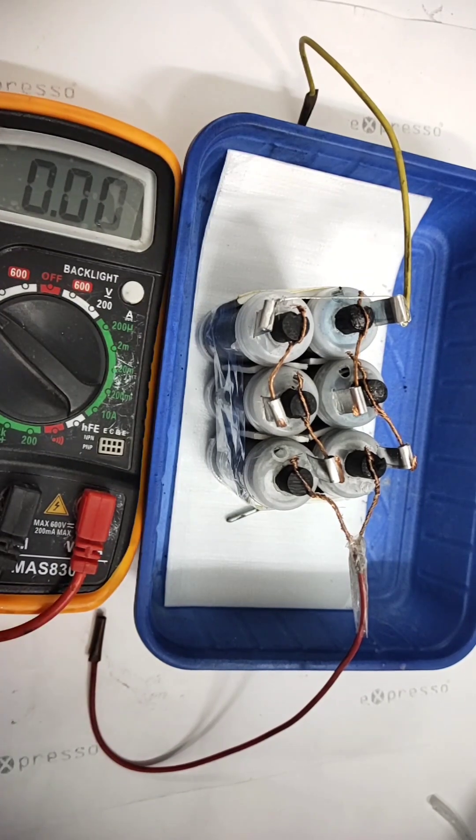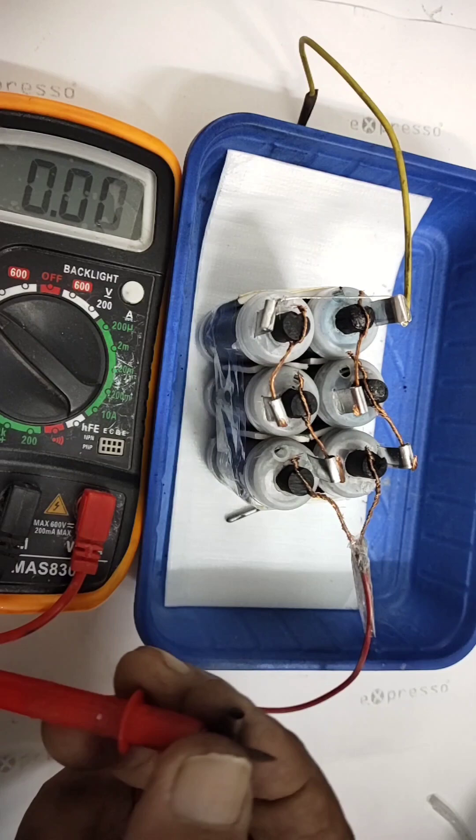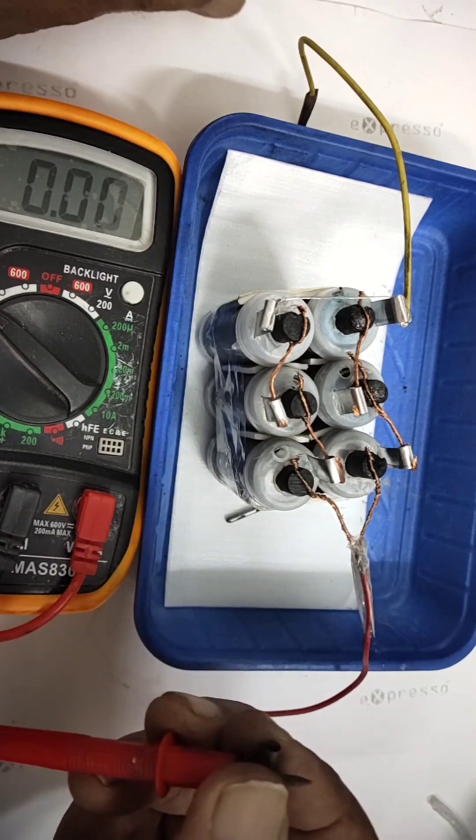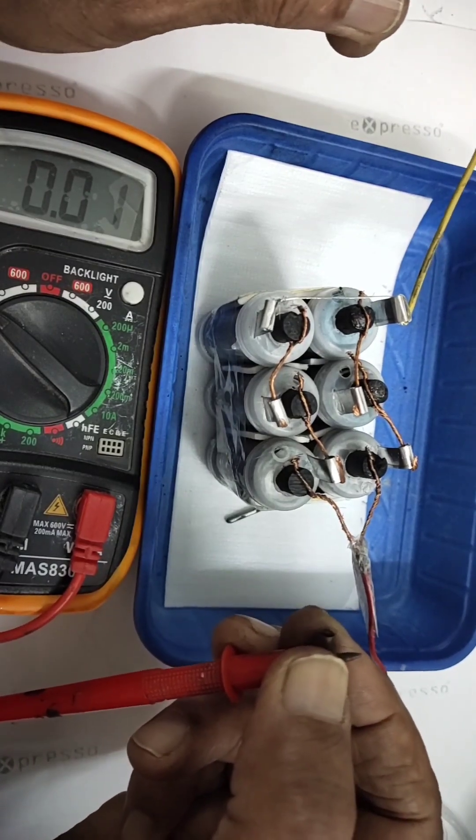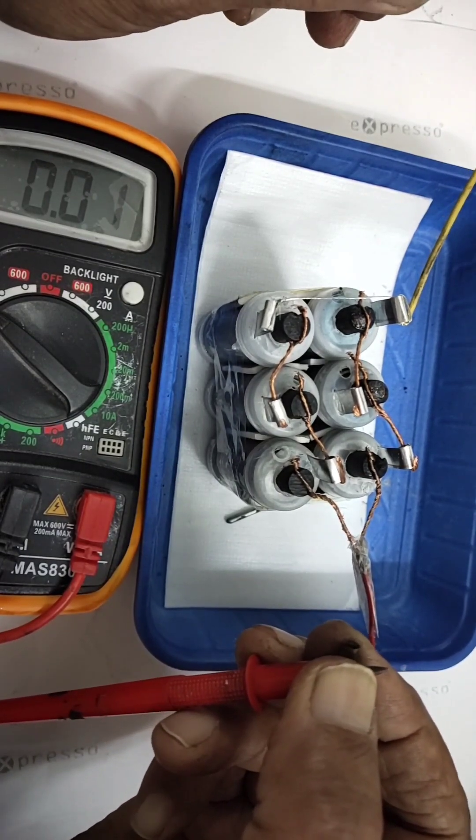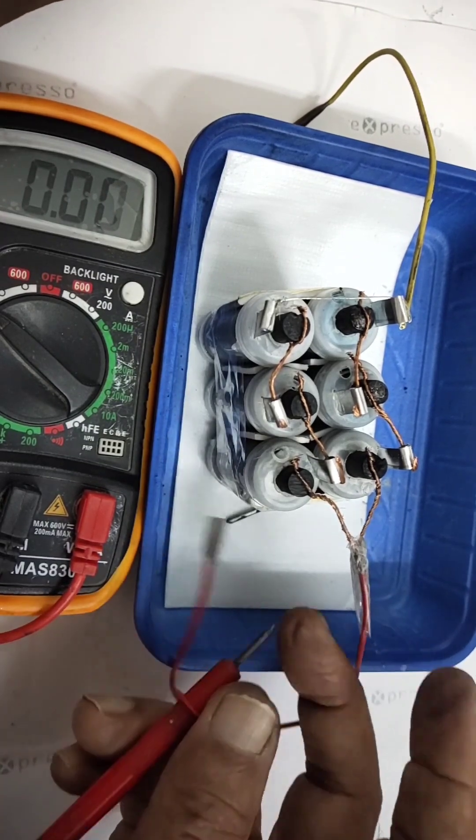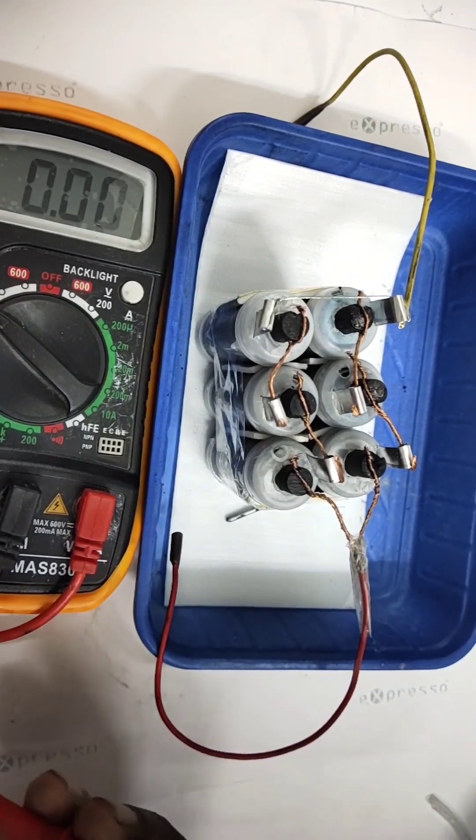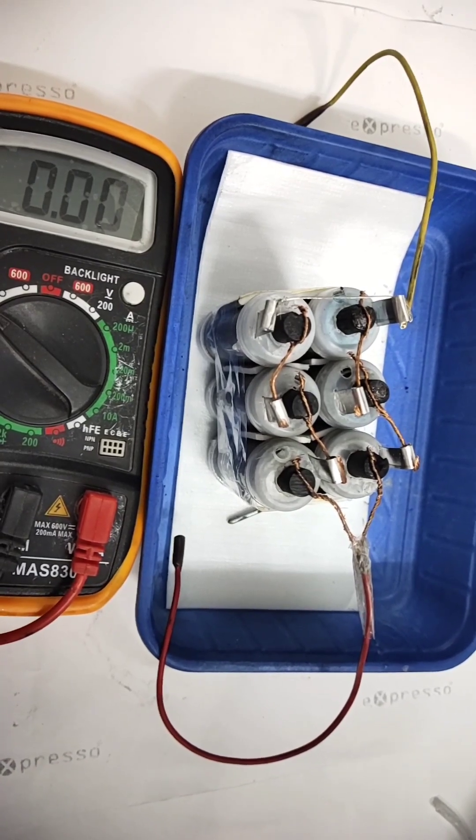We will see what is the voltage. There should not be any volt. You can see no volt is there. This small reading is because of the contact of the hand. Now we will start adding the electrolyte and see what will be the generated voltage.